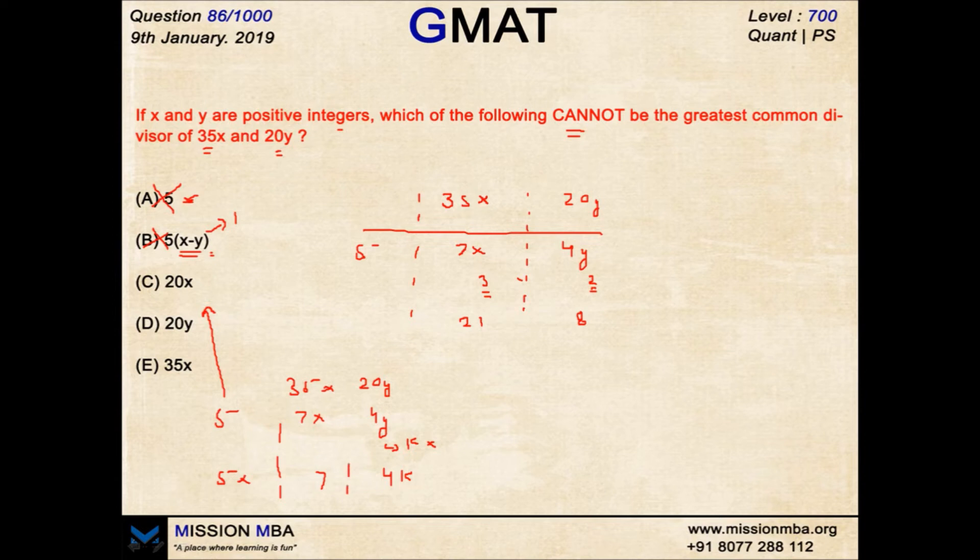No, not of course. Why? Because 7 does not have a 4 in it. Further, there cannot be any 4 which can come out of this 7 and 4K because 7 will not be divided by 4. Clearly, this can never be the greatest common divisor.